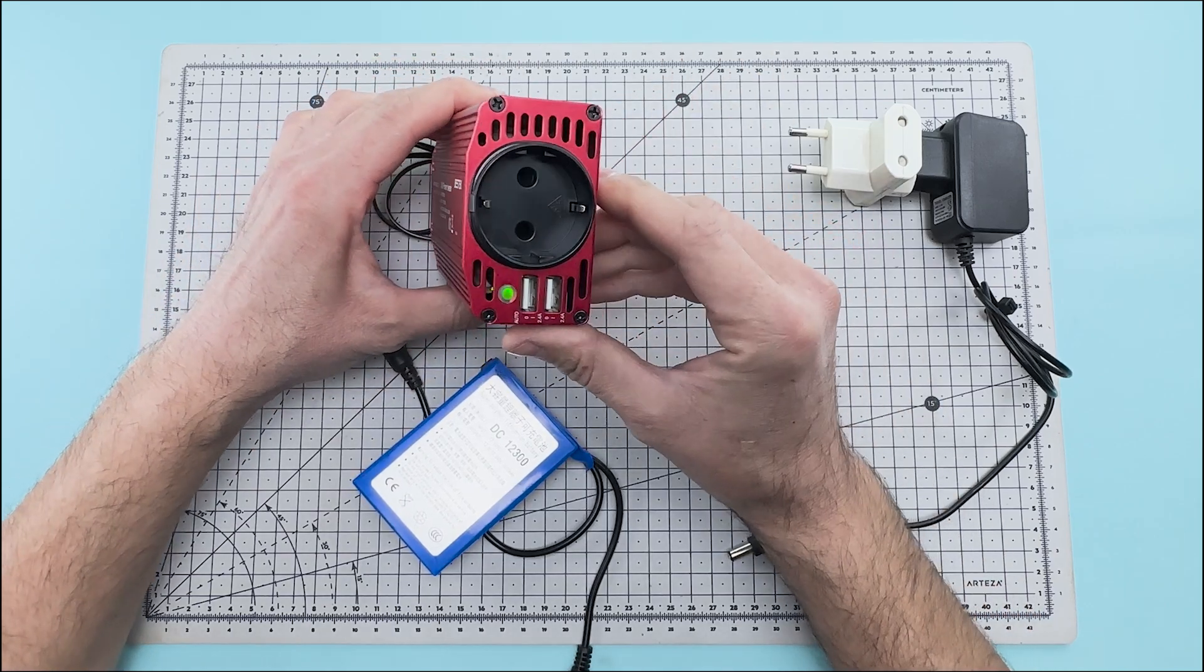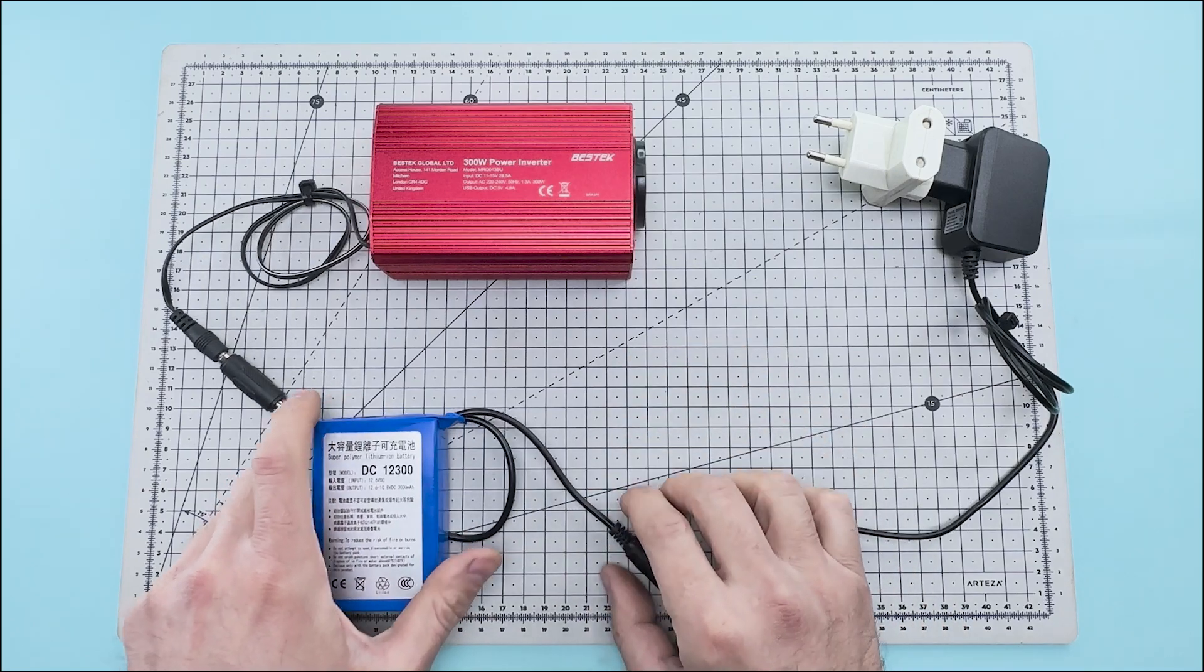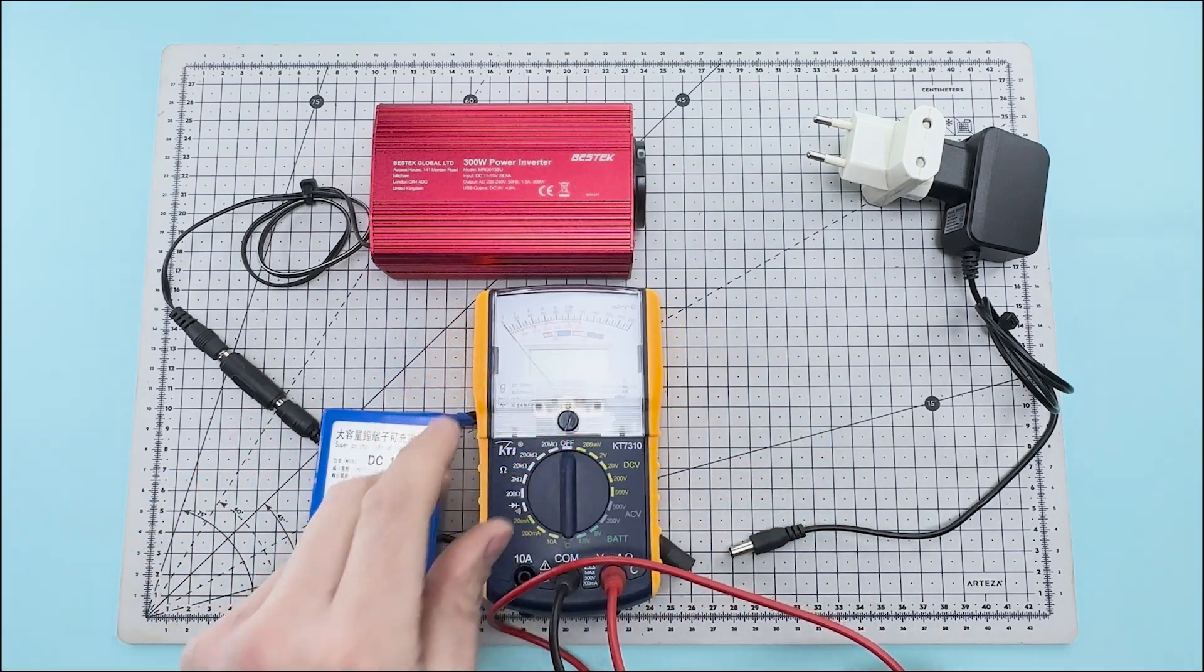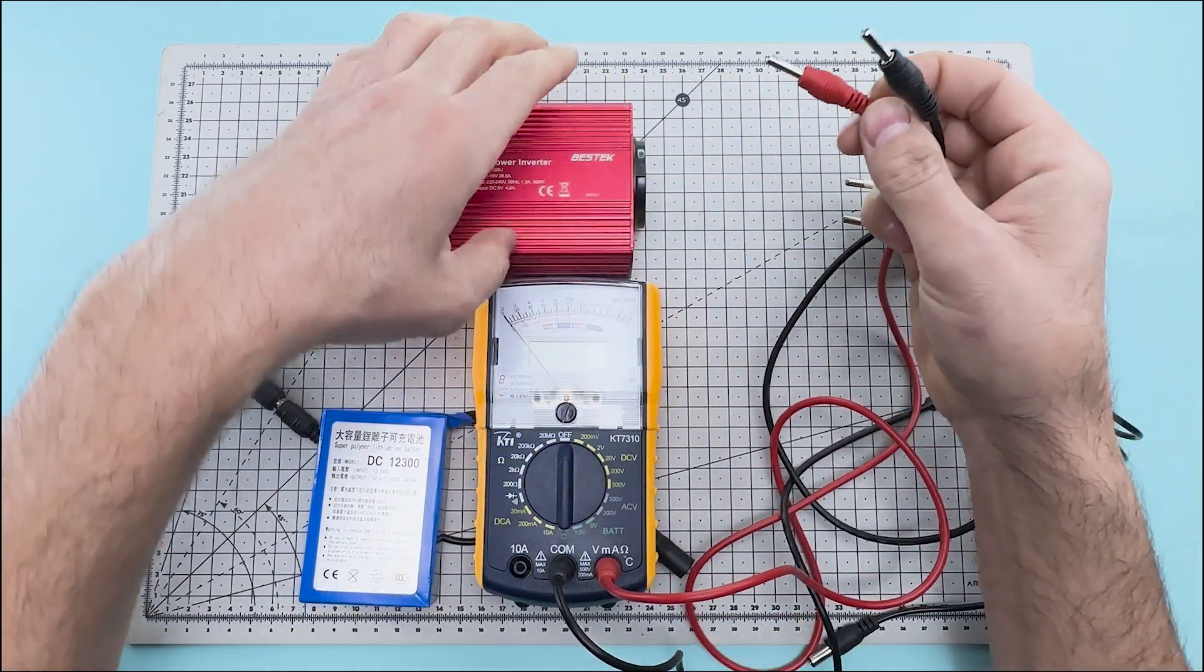Now the power inverter will transform the voltage from the lithium battery. We are going to use a voltmeter to measure the output voltage of the power inverter.